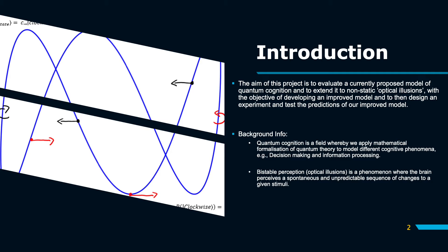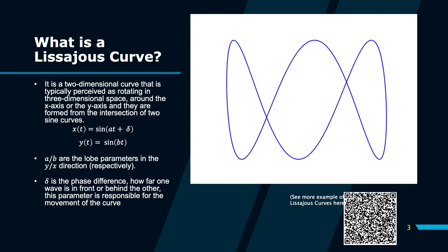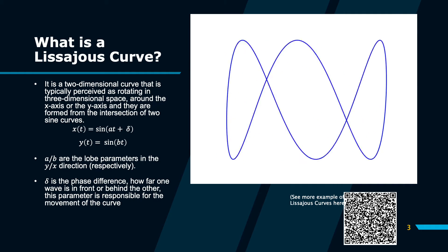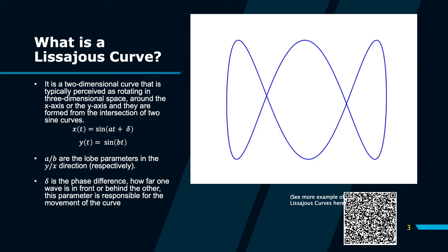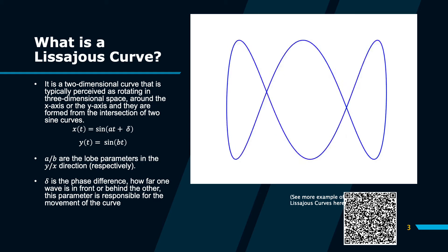The non-static optical illusion we will be using today is known as a Lissajous curve. If you look to the right, you'll see an example of a Lissajous curve. This curve is a two-dimensional curve that is typically perceived as rotating in three-dimensional space, normally around some sort of imaginary x- or y-axis.